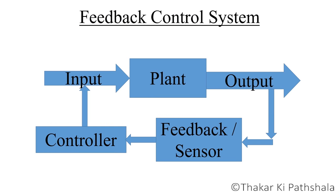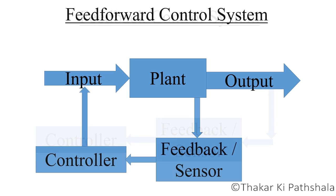To summarize our discussion: in a feedback control system, the error is detected after generation, and in a feedforward control system, the error is detected before generation.